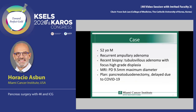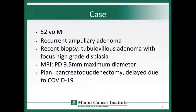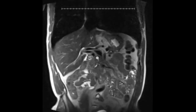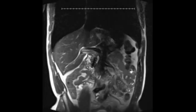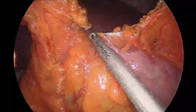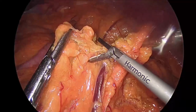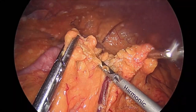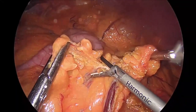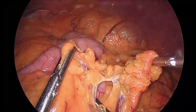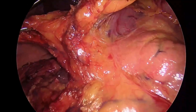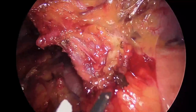The patient is a 52-year-old male with a history of a recurrent ampullary adenoma. He had undergone an endoscopic mucosal resection and now presented with a recurrent lesion and high-grade dysplasia on biopsy. An MRI of the abdomen demonstrates dilatation of the pancreatic and biliary ducts. The procedure is started by splitting the omentum longitudinally for the future postpyloric duodenojejunostomy. Then the lesser sac is entered and the gastrocolic omentum is divided from left to right up to the area of the trunk of Henle.